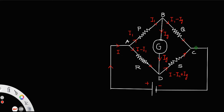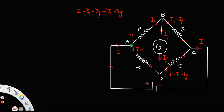I minus I1 and IG will meet at junction D and combine as I minus I1 plus IG, which then moves through resistor S. These two currents combine again at C: I minus I1 plus IG, plus I1 minus IG. The IG terms cancel and the I1 terms cancel, leaving current I. So the current enters as I at point A and comes back as I from point C — confirming conservation of charge.